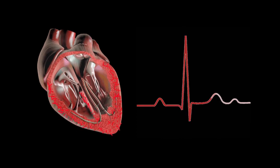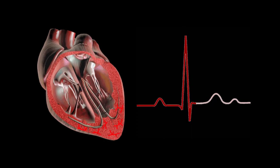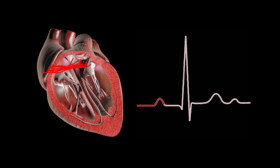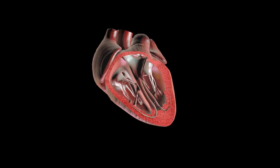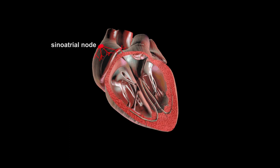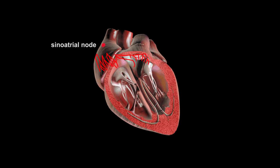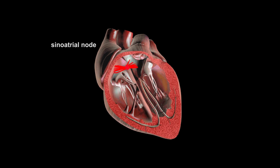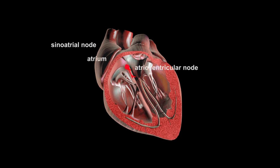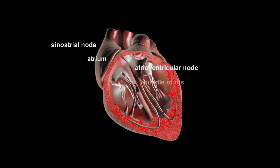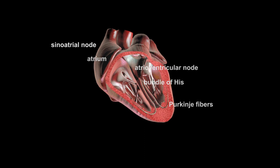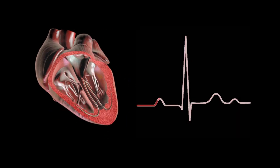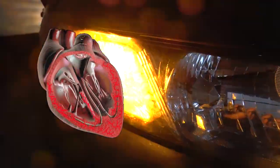During each heartbeat, a healthy heart will have an orderly progression of depolarization. Depolarization is a sudden electrical change within a cell when the negative internal charge of the cell becomes positive for a brief time. This depolarization starts with pacemaker cells in the sinoatrial node, spreads out through the atrium, passes through the atrioventricular node, into the bundle of his and into the purcunio fibers, spreading down and to the left throughout the ventricles.